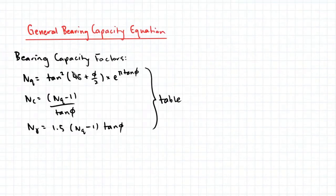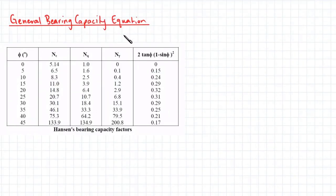The bearing capacity factors can be found through these equations here. Now, instead of calculating these factors every time, we can instead use this table here, as long as we know the friction angle of the soil.